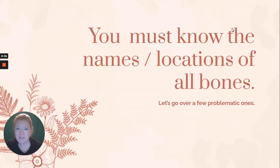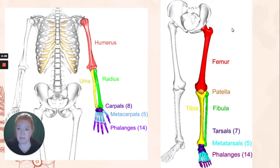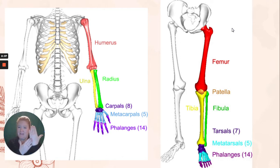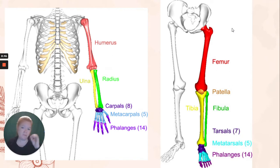You have to know the names and locations of all the bones. Let's go over a few of the problematic ones. In the arm: humerus, radius on the thumb side, ulna on the pinky side. Carpals are the wrist, metacarpals are the hand — notice there is one in the thumb. Phalanges are the fingers. We're going to go over this in more detail on a later slide.